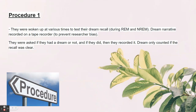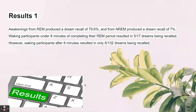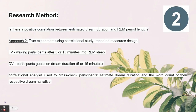If you know your research methods well, it will be perfect for evaluating each study. After being woken up, participants were asked if they had a dream; if they did, they recorded it. A dream only counted if the recall was clear. The results were: awakening from REM produced dream recall of 79.6%, while from non-REM it was only 7%. Waking participants under eight minutes of completing their REM period resulted in 5 to 17 dreams being recalled, whereas waking after eight minutes resulted in only 6 out of 132 dreams recalled.